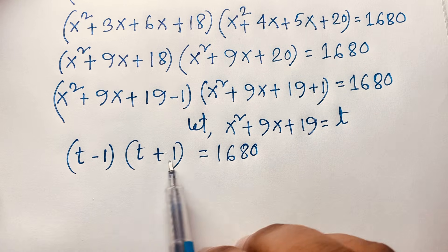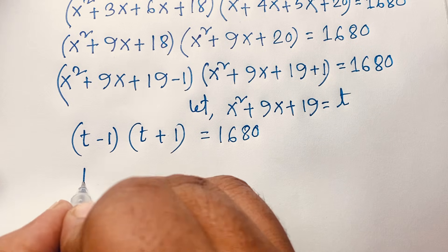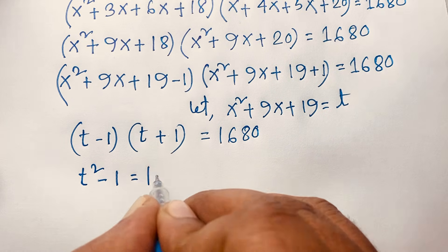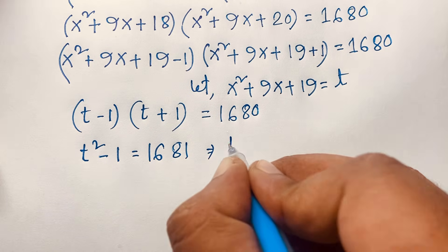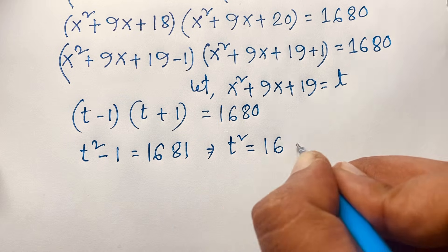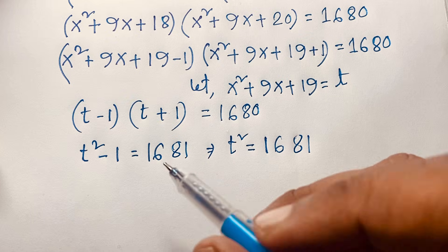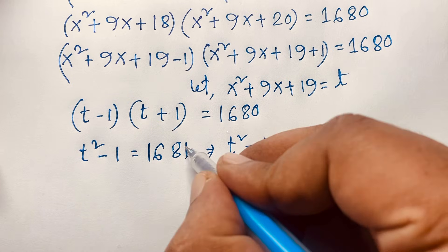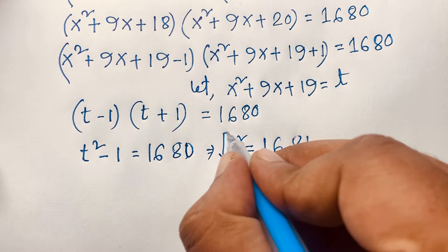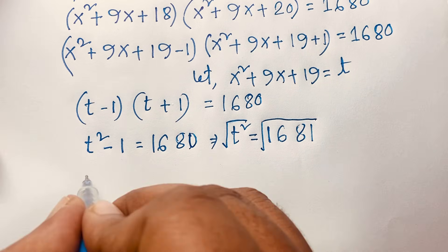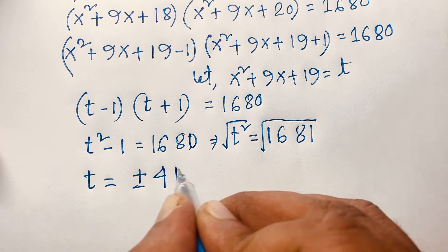Using the identity (a + b)(a − b) = a² − b², we get t² − 1 = 1680. Moving the −1 to the right side: t² = 1681. Taking the square root of both sides, we find t = ±41.